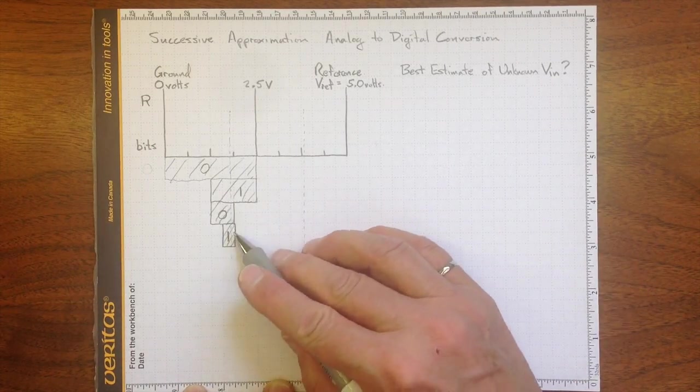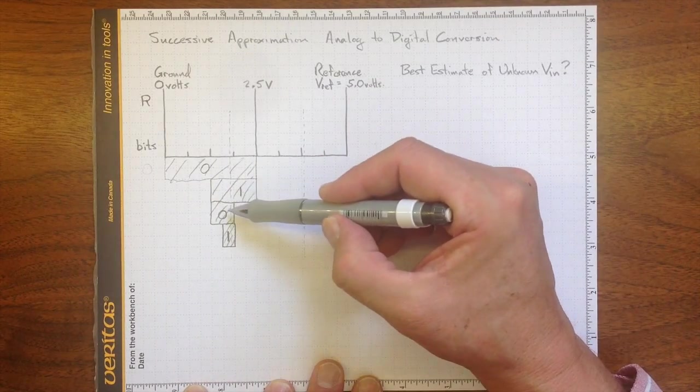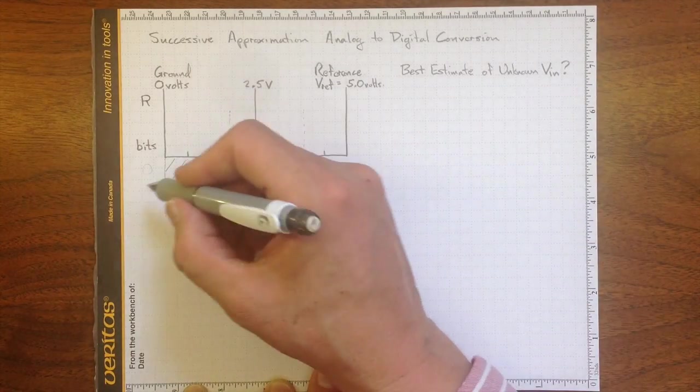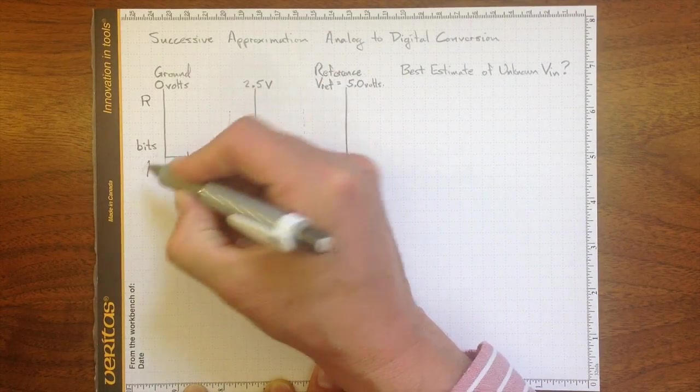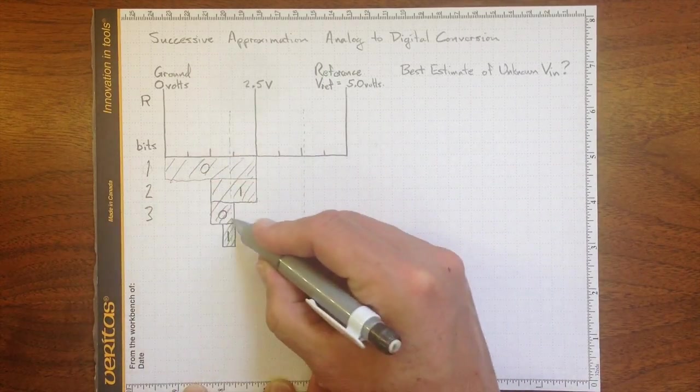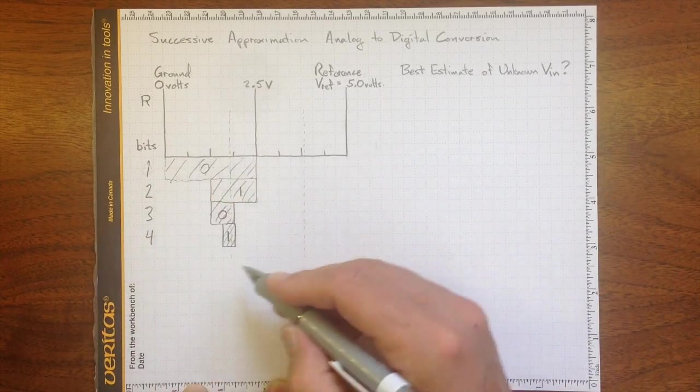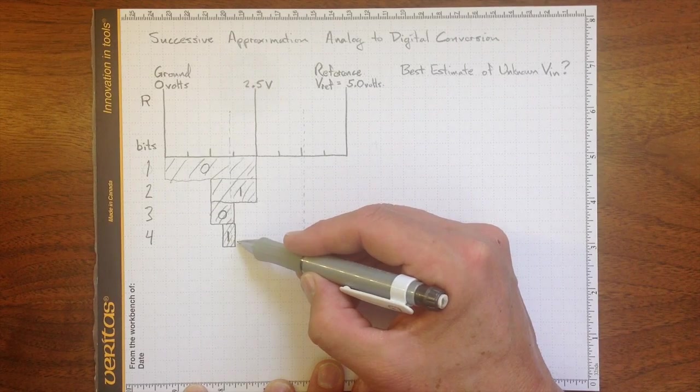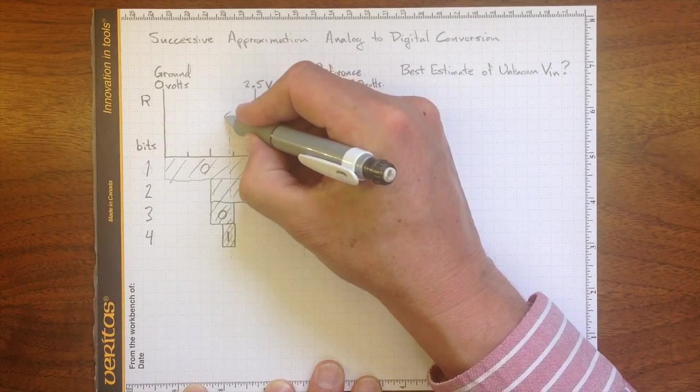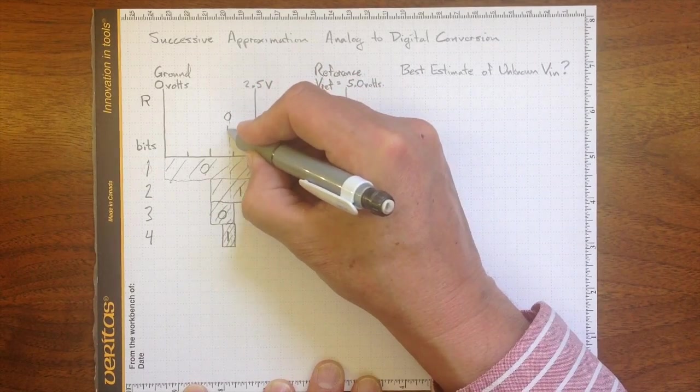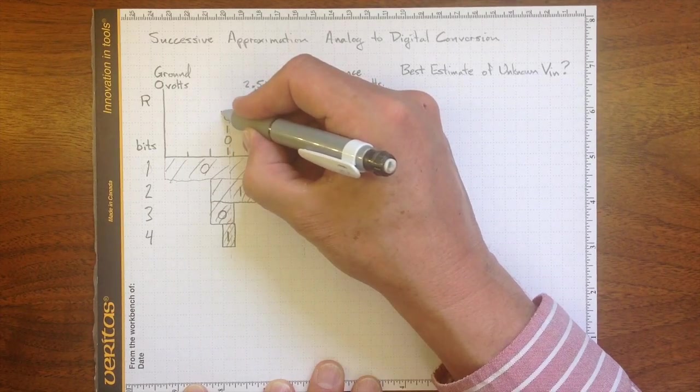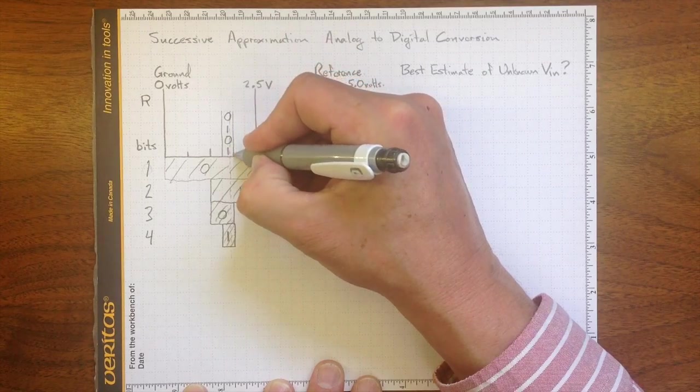So for this voltage, we got zero, one, zero, one, and we could carry this on for as many bits as we wanted. But we got one bit of information there, two bits when we did it again, three bits total when we did it again, and now four bits. So we'll stop after four bits of conversion, just for this example. And if we go up here, zero, one, zero, one.